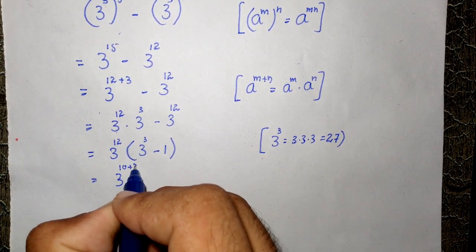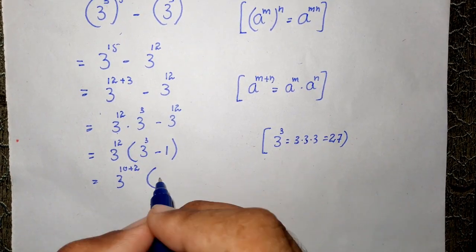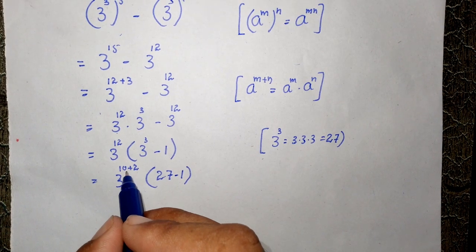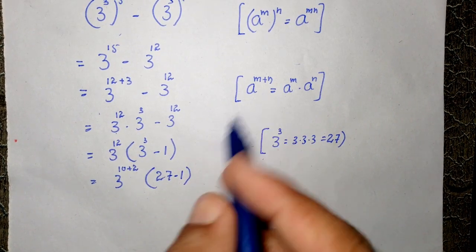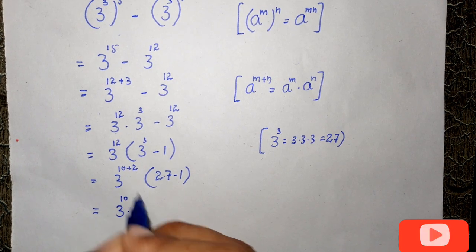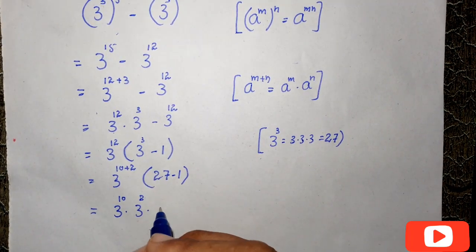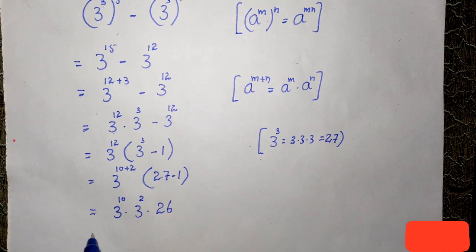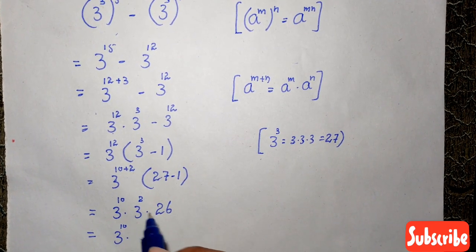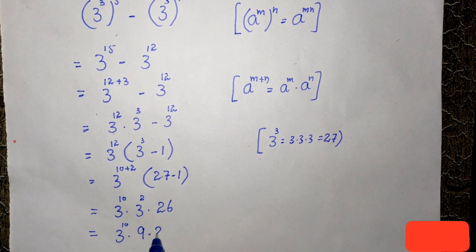This can also be written as 3 to the power of 10 plus 2, which equals 12, times 27 minus 1, which equals 26. By applying the product rule, this will become 3 to the power of 10 times 3 to the power of 2 times 26. Again, 3 to the power of 2 is equal to 9, so this gives 3 to the power of 10 times 9 times 26.